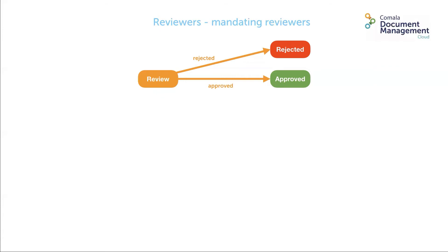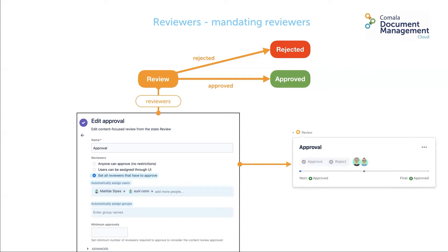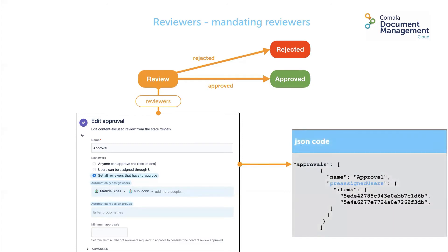If you want to mandate reviewers, you're going to set all the reviewers that have to approve. You must enter either individual users or the Confluence group name or names. There is no option to unassign or assign other user reviewers. The workflow approval is disabled for anyone who is not assigned. The JSON code has pre-assigned users as a parameter for the approval.